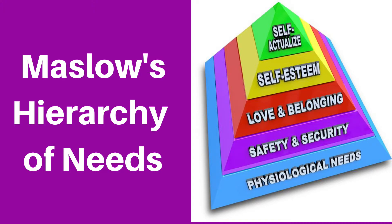At the very top of the pyramid was the goal — self-actualization — and Maslow believed that when people reach this level of the pyramid, they are able to meet their full potential.